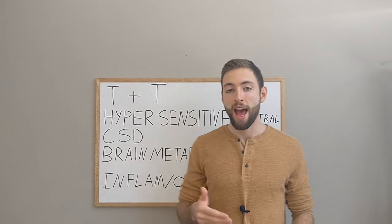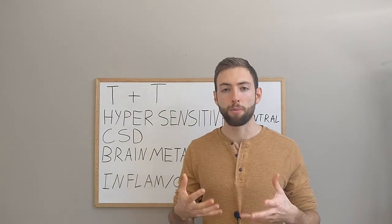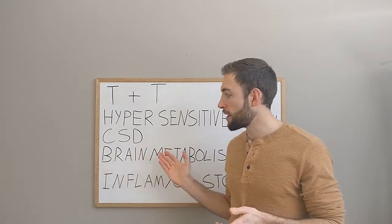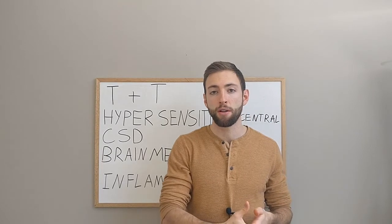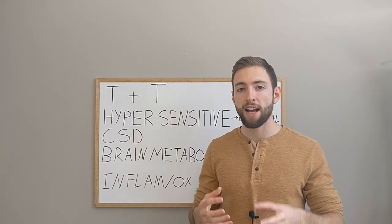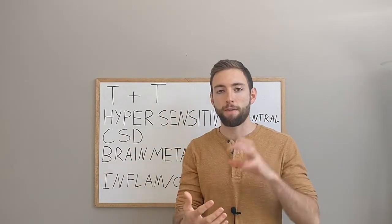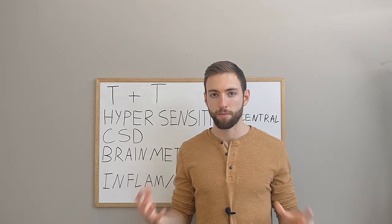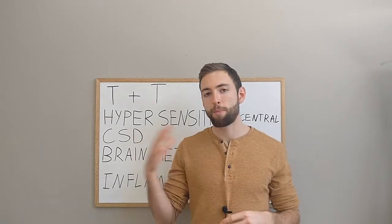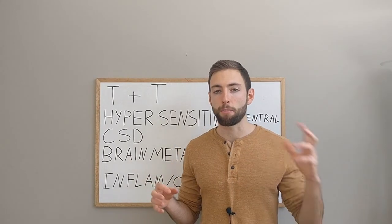If that cortical spreading depression happens inside of the occipital region of the brain, the occipital region is responsible for vision. And if that cortical spreading depression happens in the occipital region, then we may experience a visual aura as the visual part of our brain is going through this. So we may experience that fortification spectra. We might experience that scintillating scotoma. Depending on where it's happening in the brain, we may experience an aura in a different place.